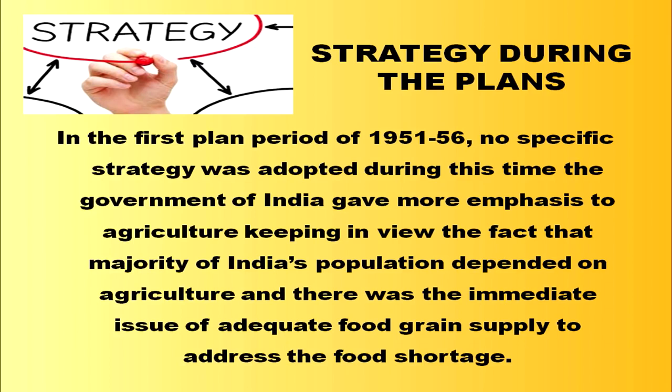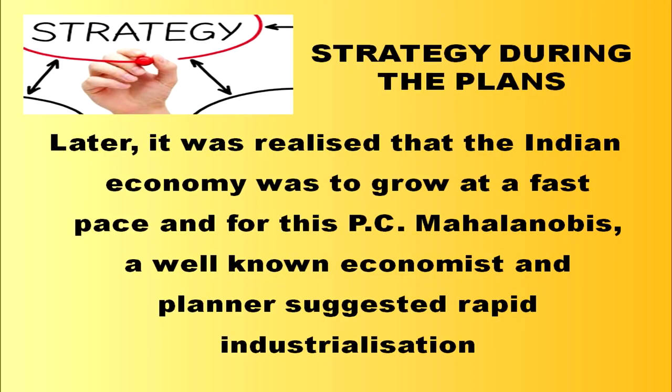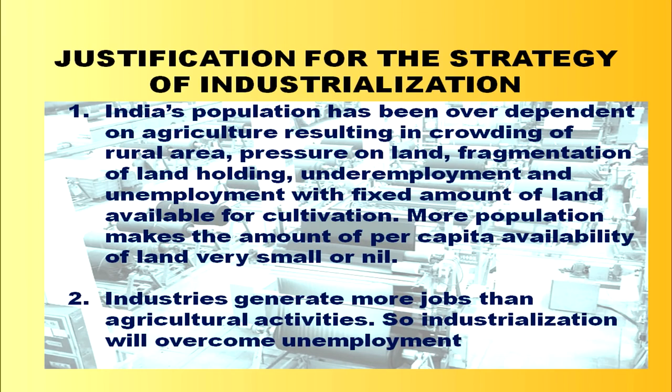During the first plan period, the government of India gave more emphasis to agriculture, keeping in view that the majority of India's population depended on it and there was an immediate issue of adequate food grain supply. Later it was realized that the Indian economy needed to grow at a fast pace, and P.C. Mahalanobis, a well-known economist and planner, suggested the strategy of rapid industrialization.